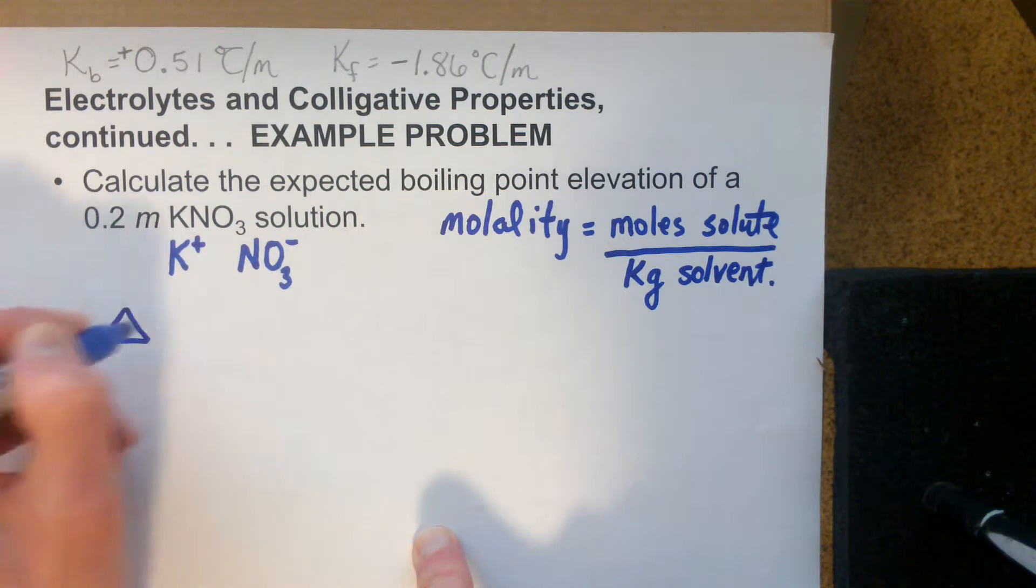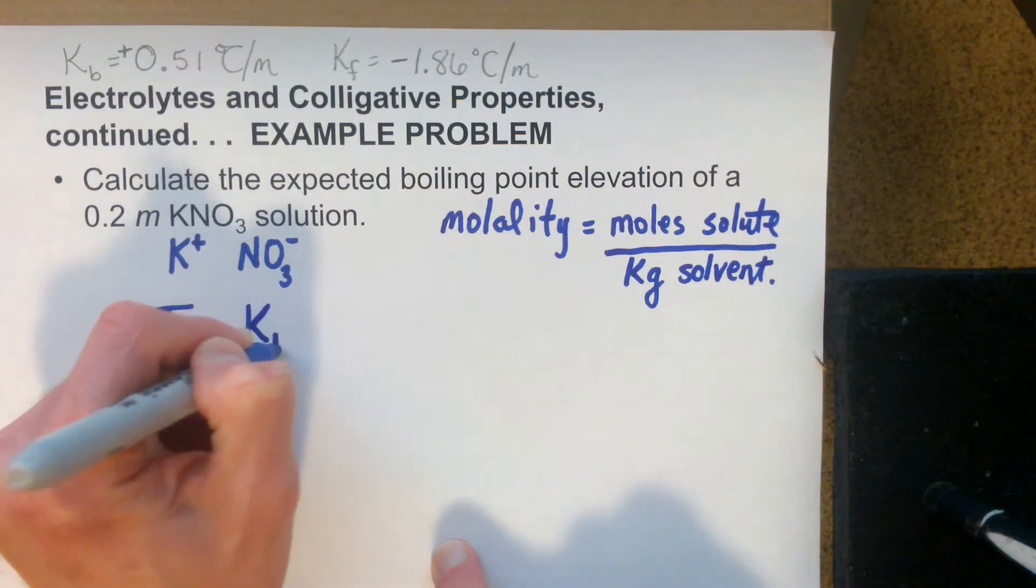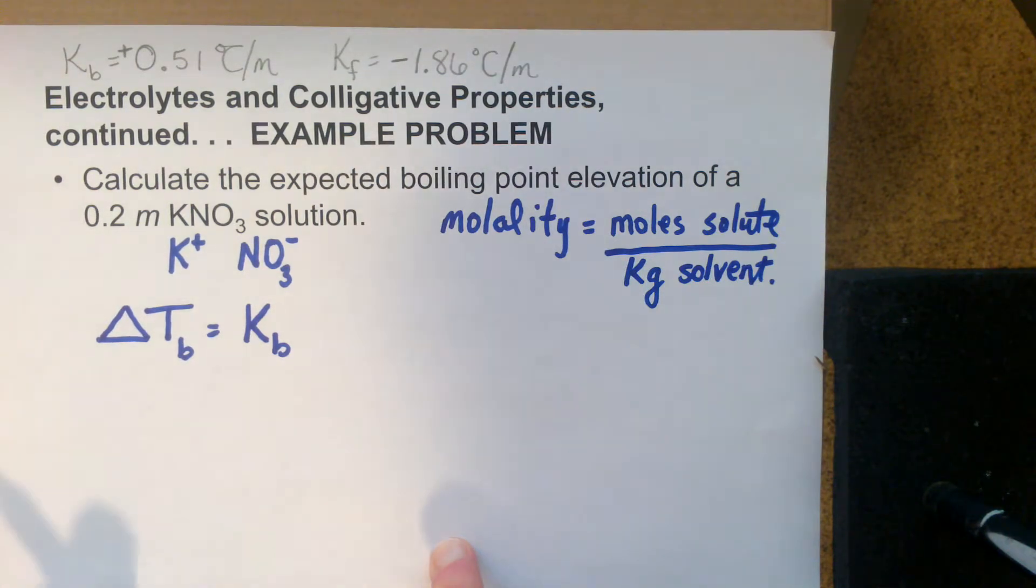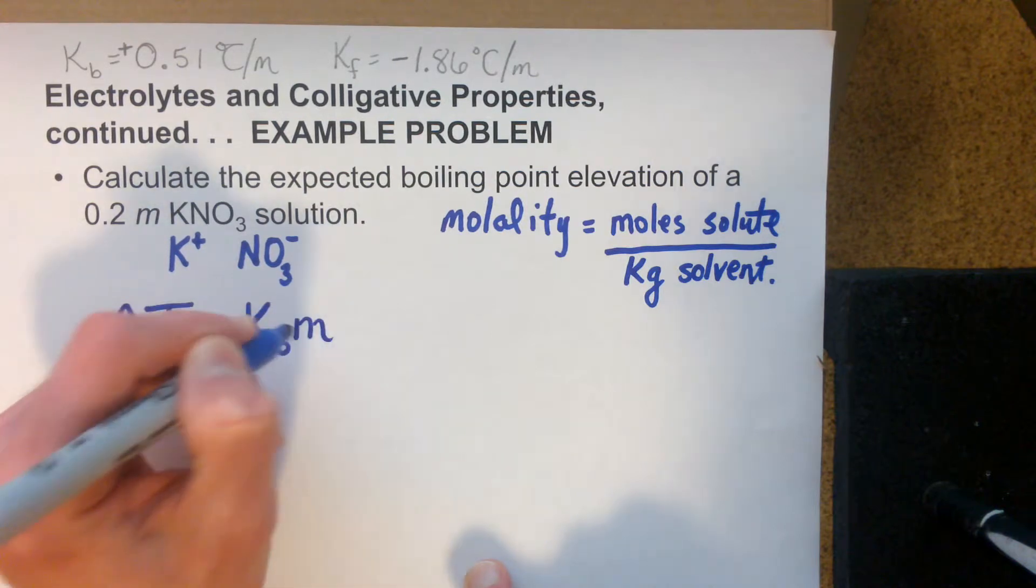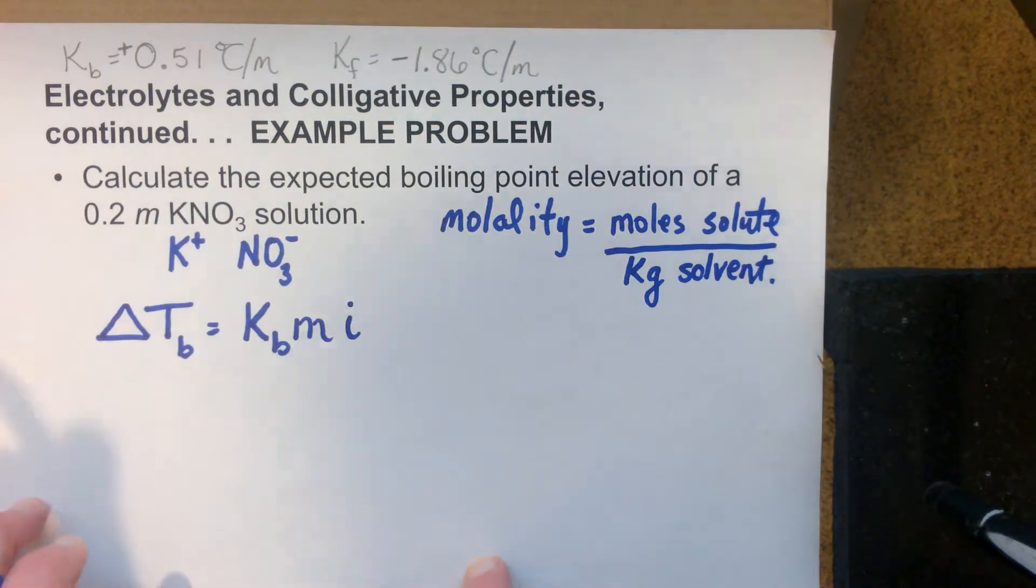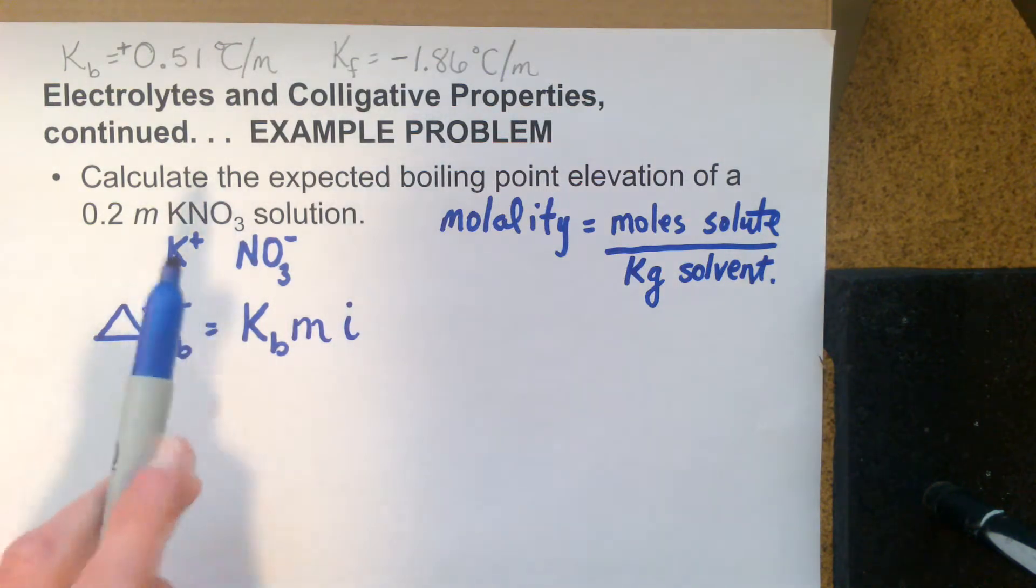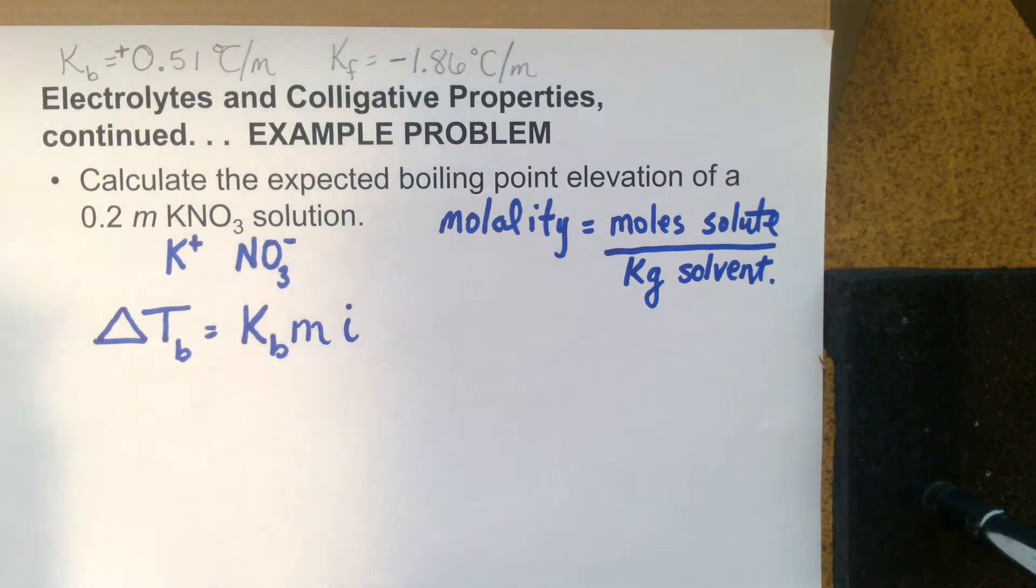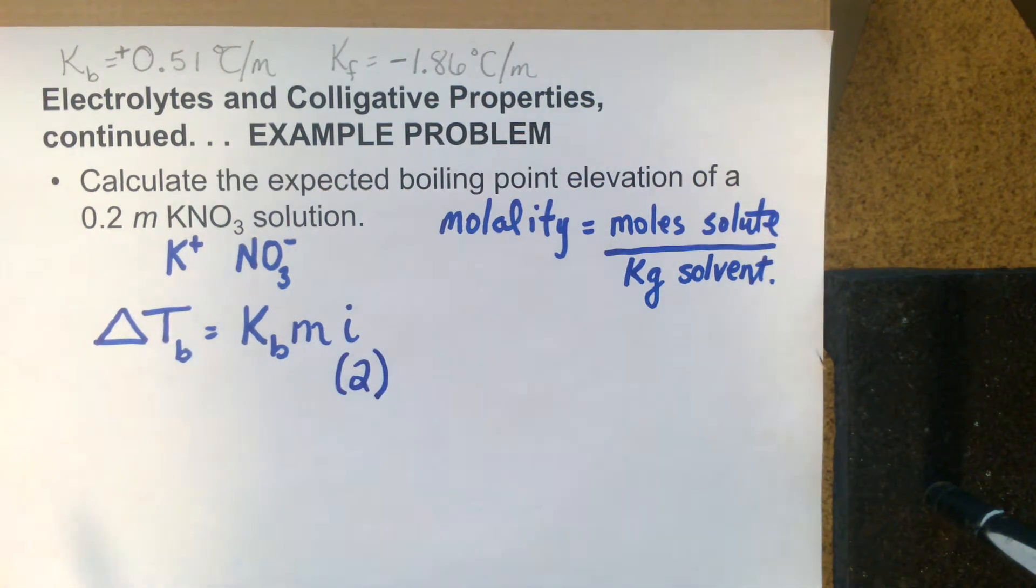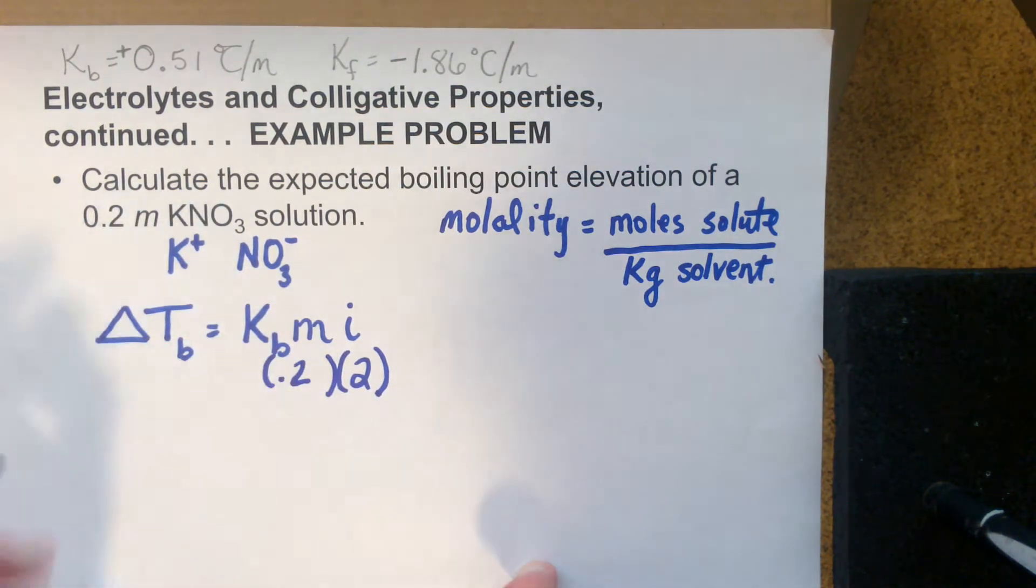Our formula here is delta Tb, the boiling point elevation change, equals Kb times molality times i. Kb is a boiling point molality constant. This is an aqueous solution, so we're looking at water as the solvent, multiplied by the molality, which is given here, 0.2. One other thing is often called the Van't Hoff factor, usually represented with a lowercase i. That is why it is necessary to determine if the solute is composed of ions or molecules. Because this is composed of two ions, the potassium and the nitrate ion, the Van't Hoff factor is two.